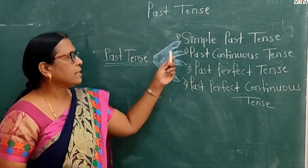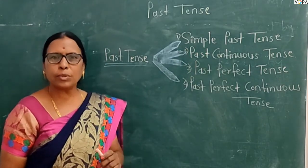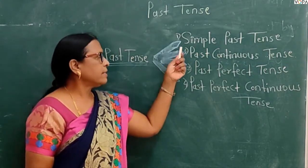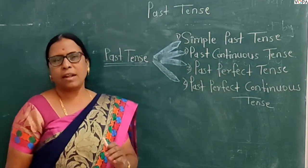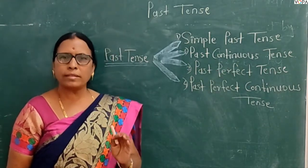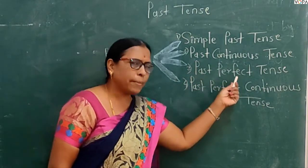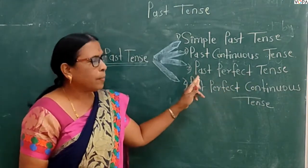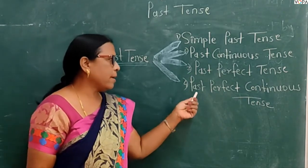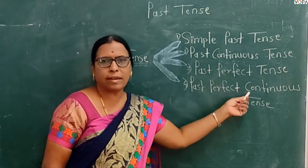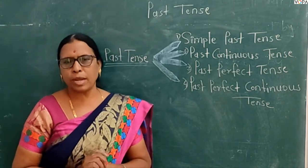The first is simple past tense — manje sadha bhukha. The second is past continuous tense — apoorna kimwa salu bhukha. The third is past perfect tense — apoorna bhukha. And the fourth is past perfect continuous tense — apoorna bhukha.